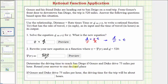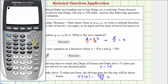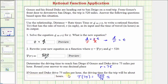Next, we're asked to determine the driving time to reach San Diego if Gonzo and Duke drive 75 miles per hour, and we're asked to round to one decimal place. If they're driving 75 miles per hour, we're given r equals 75, and therefore to find the time, we want to determine the function value T of 75. T of 75 equals 520 divided by 75. We'll go to the calculator to get a decimal approximation. So 520 divided by 75 is approximately 6.9, which means if Gonzo and Duke drive 75 miles per hour, the driving time for the trip will be about 6.9 hours.